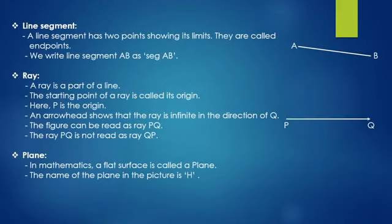Ray. A ray is a part of a line. The starting point of a ray is called its origin. Here, P is the origin. An arrowhead shows that the ray is infinite in the direction of Q. The figure can be read as ray PQ. The ray PQ is not read as ray QP.